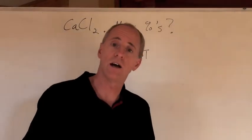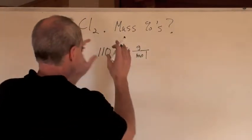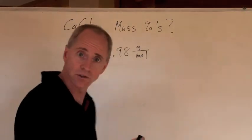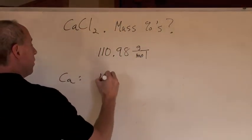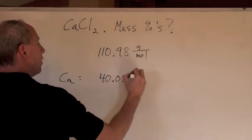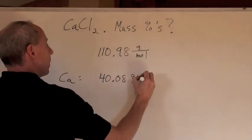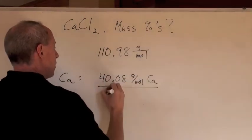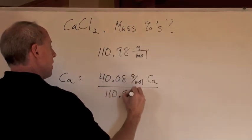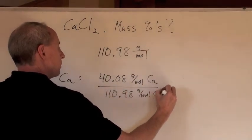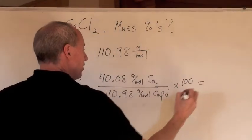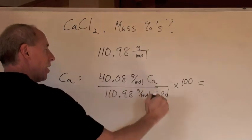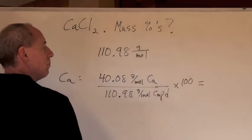What percent of that is going to be calcium? Well, for the calcium, what you do is you take the molar mass of 40.08 grams per mole of calcium, and you divide it by the total of 110.98 grams per mole of the compound. And what that's going to give you, times 100, is going to be that percent of calcium in the compound.